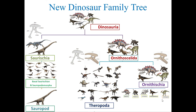For example, birds have a hip structure similar to those of Ornithischians, but in the older classification they were considered under Saurischia. In the new classification, rather than that arrangement, Theropoda and Ornithischia are placed as sister clades, and these two sister clades come under a new clade called Ornithoscalida.